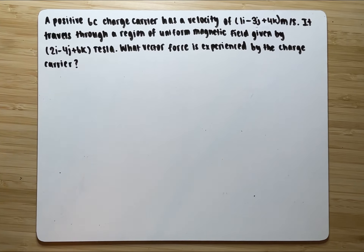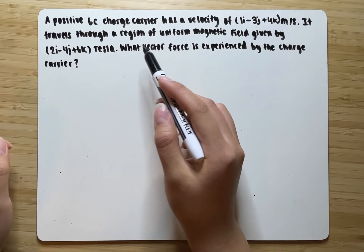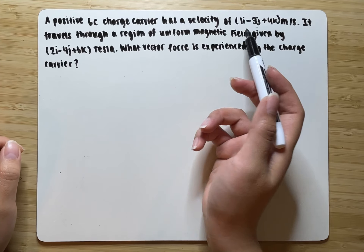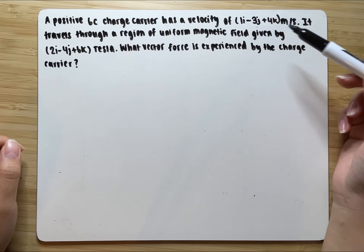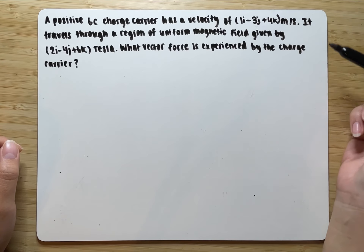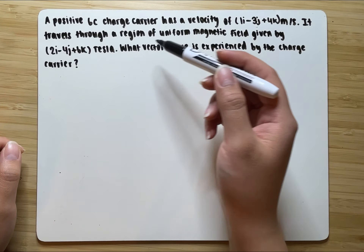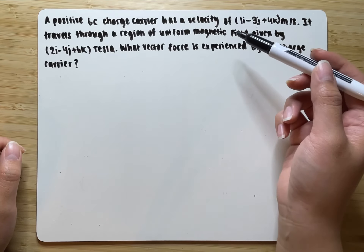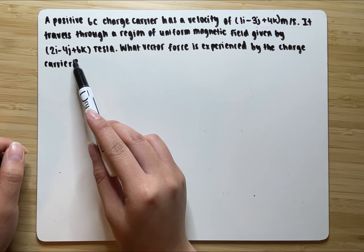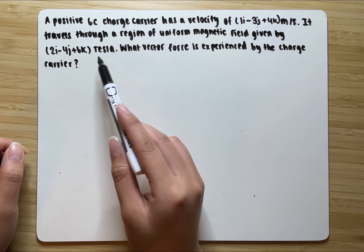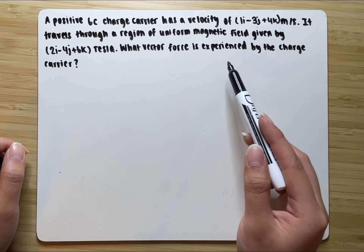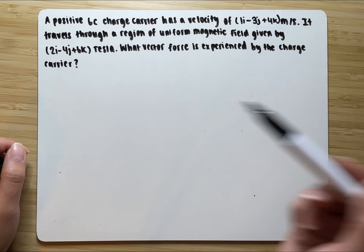A positive 6 Coulomb charge carrier has a velocity of 1i minus 3j plus 4k meters per second. It travels through a region of uniform magnetic field given by 2i minus 4j plus 6k Tesla. What vector force is experienced by the charge carrier?